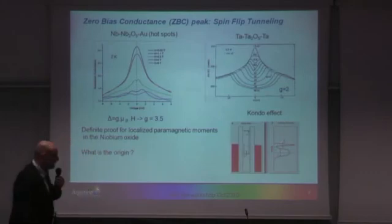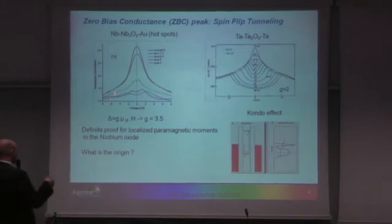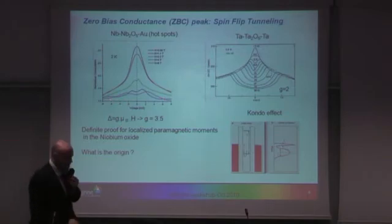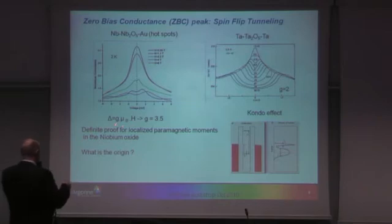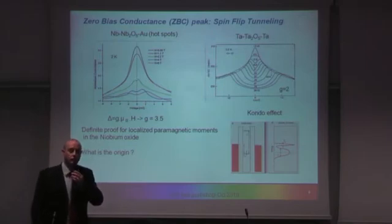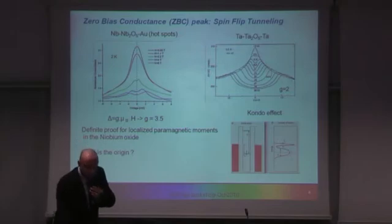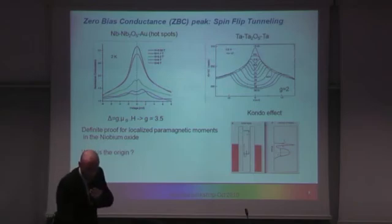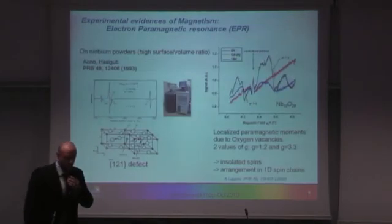When we apply a magnetic field to this peak — zooming in — it splits in the magnetic field. The splitting gives a g-factor, which here is 3.5. I was surprised to see such a large g-factor; I was expecting something close to 2 for nearly non-interacting single electrons. This has been noted also by Wyatts and is consistent with the Kondo effect in the tunnel barrier. This is definitive proof of localized paramagnetic moments in the niobium oxides.